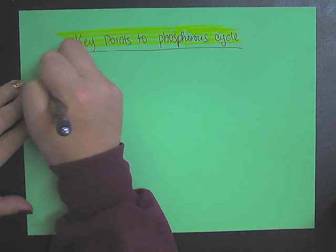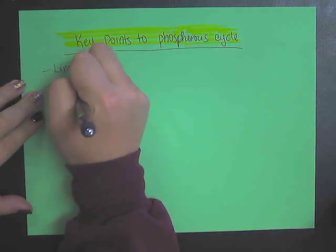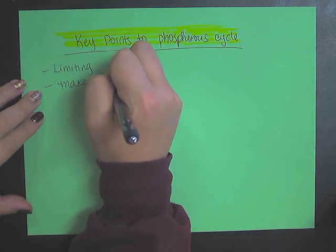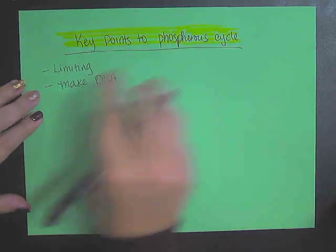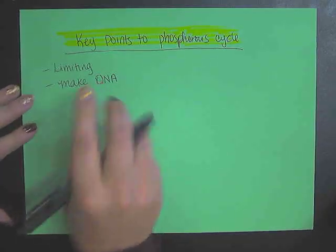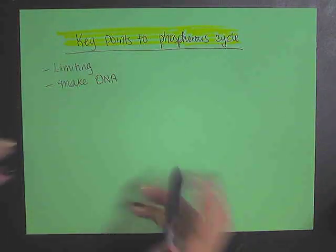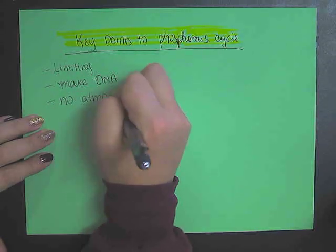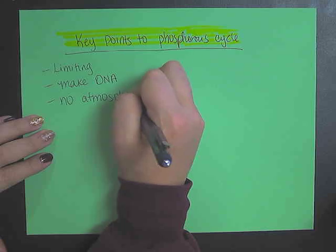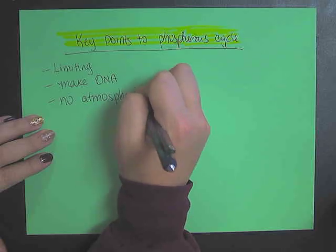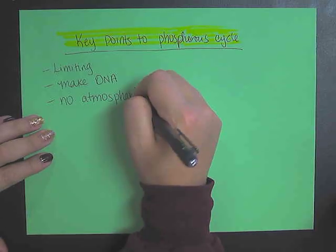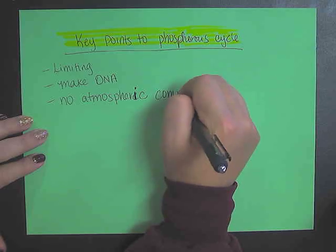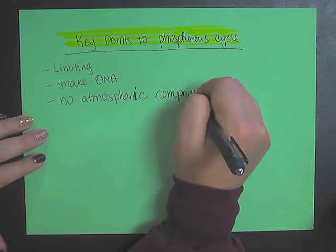Organisms need to use phosphorus to make DNA specifically. So it's used to make that DNA. And with the phosphorus cycle, there's no atmospheric component to the cycle — it's going to be all solid components.